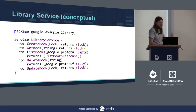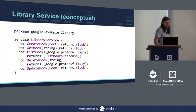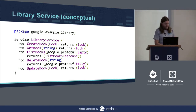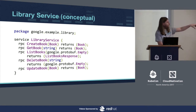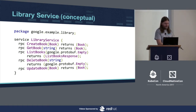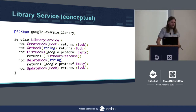Let's say we have this conceptual library service used as an example. We want to be able to create a book, get a book, list stuff, delete stuff, and update the book. There's a list book string which is some identifier for the book — the book name — guaranteed to be unique. In list books, google.protobuf.Empty is just a message with nothing in it, the equivalent of void. So this is what we're starting with, and we're going from here to making it actually maintainable.